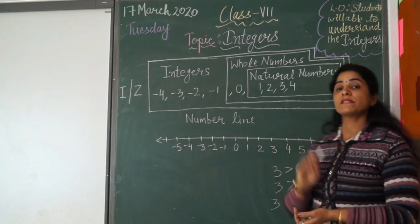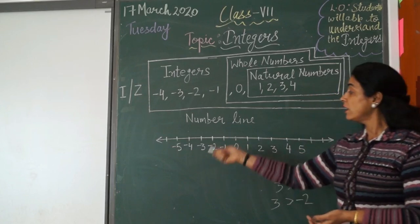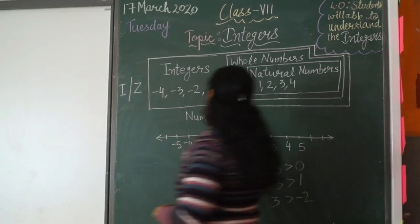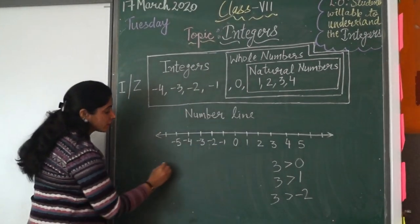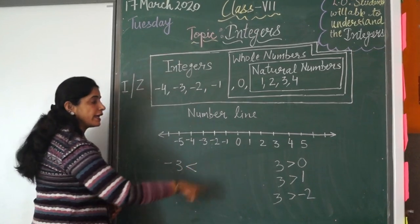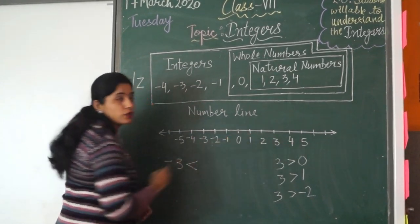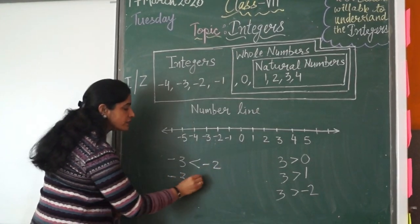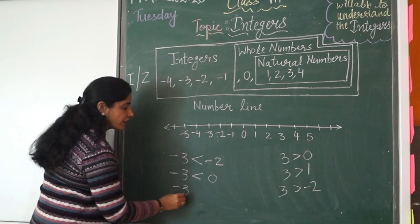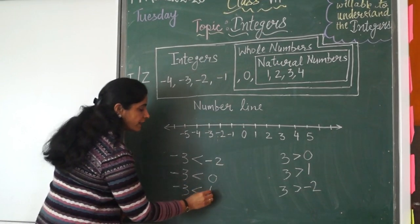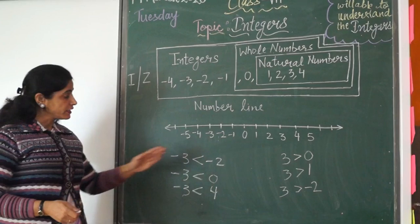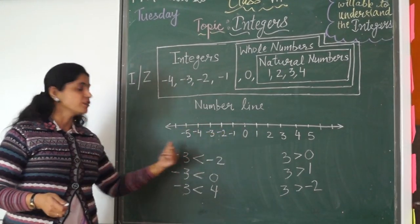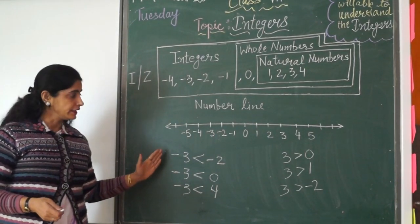An integer is smaller than all other integers which are on the right of it. So if you observe, minus 3 is smaller than all the integers on its right. Minus 3 is smaller than minus 2, minus 3 is smaller than 0, and minus 3 is smaller than every positive integer. So integers which are on the right of a given integer are bigger, and the integer which is on the left is the smaller one.